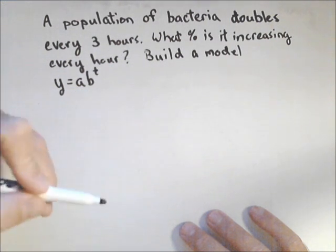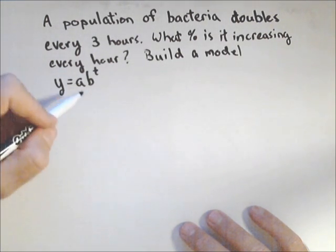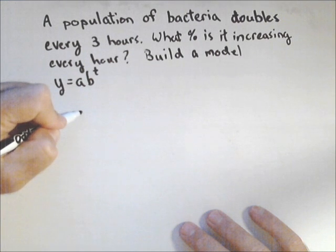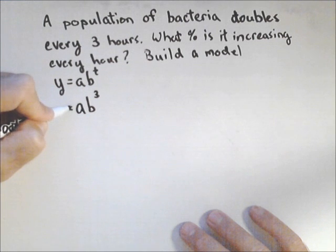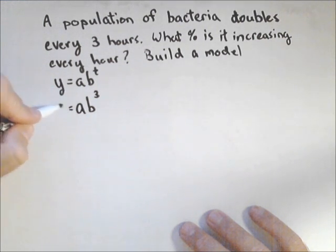I'm going to show you how to find b, but then I'm going to show you a shortcut. If our initial amount is a, we know that after three hours we should have double our initial amount. So we should have 2a.